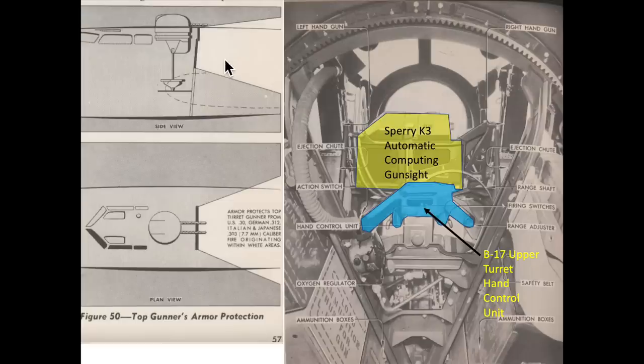The upper turret gunsight system was integrated with the turret's hand control unit. This image represents a view looking up into the turret's dome with the Sperry K3 automatic computing gunsight and the turret's hand control unit highlighted.